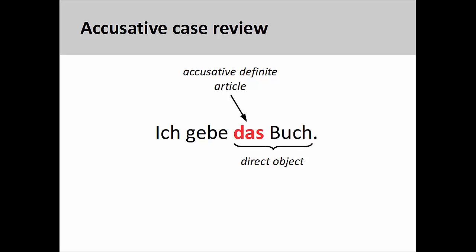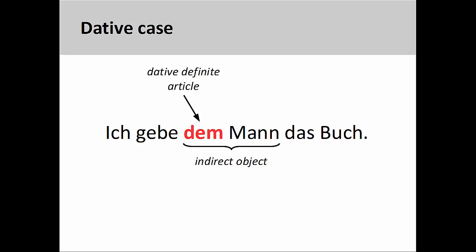Let's briefly return to the previous slide to introduce the dative case. You will notice that there seems to be some important information missing here: 'Ich gebe das Buch' — I give the book. To whom am I giving the book? Who receives it? This is where the dative case comes in. The dative case is used in German to indicate the indirect object of the sentence.